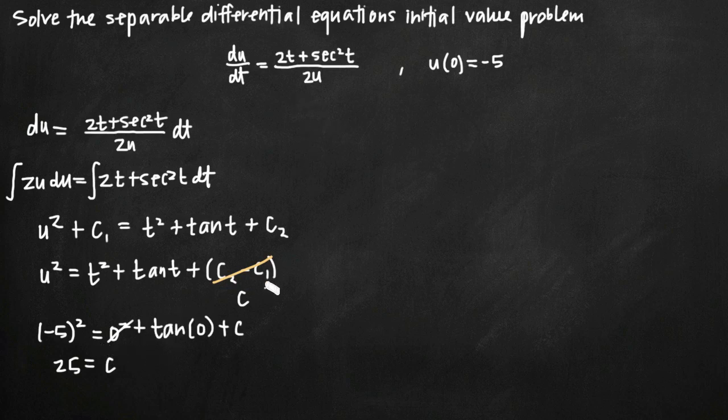We plug c = 25 back into the equation. It's best to solve directly for u rather than leaving it as u². Taking the square root of both sides gives u = ±√(t² + tan(t) + 25). Normally we'd leave the answer like this. We add the ± when taking the square root because the answer could be positive or negative and still satisfy the u² equation.